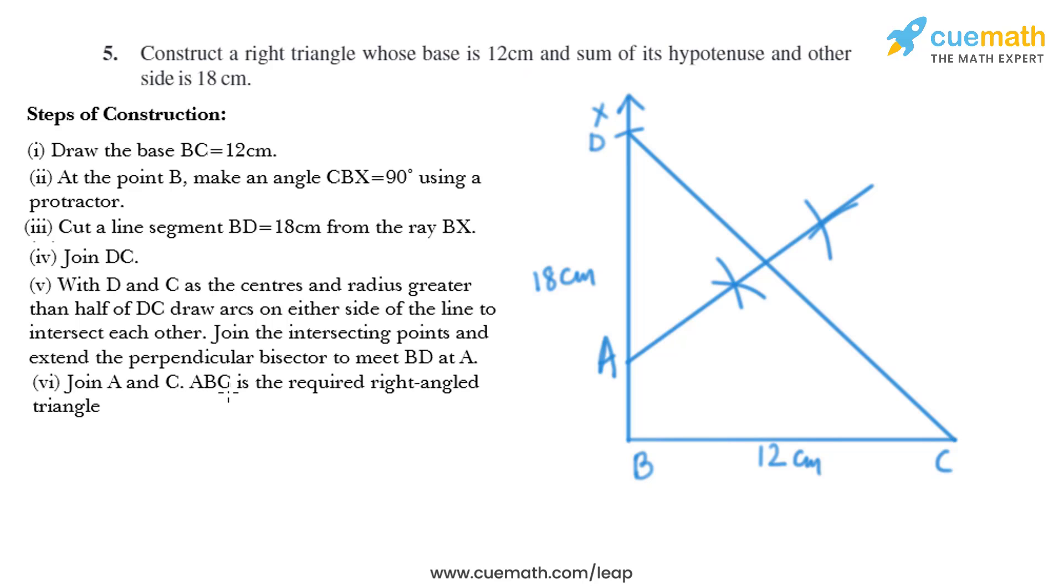Then we need to join A and C, and ABC is the required right angle triangle. So let's join A and C. So we have got ABC as the required right angle triangle.